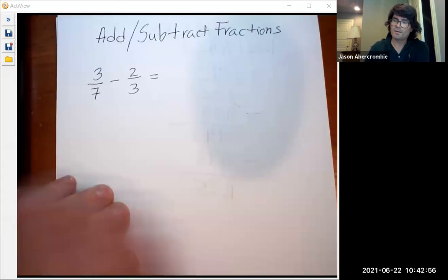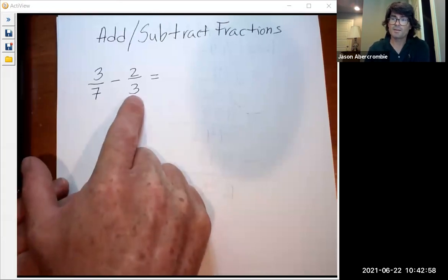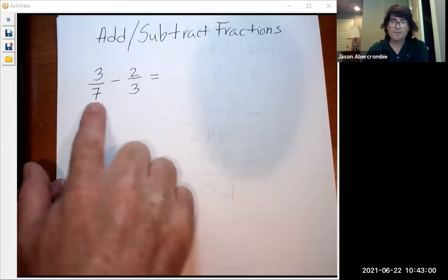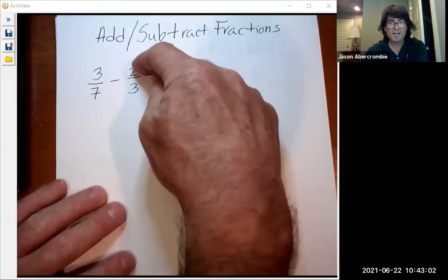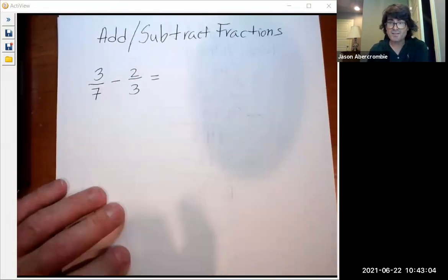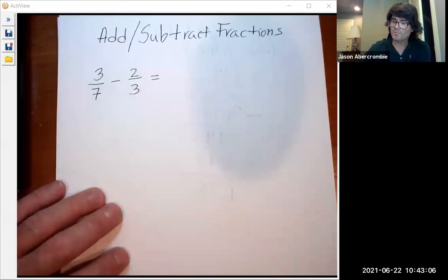So first of all, I've got a problem here where we don't have a common denominator. The denominator is the bottom, the numerator is the top. Denominator D, think down, if that helps you remember.